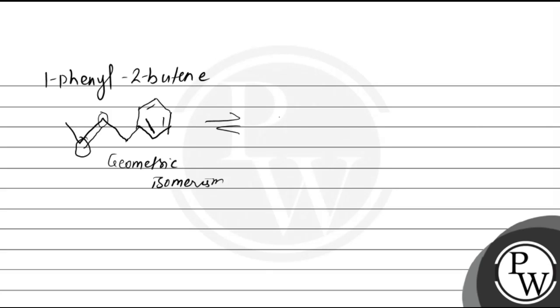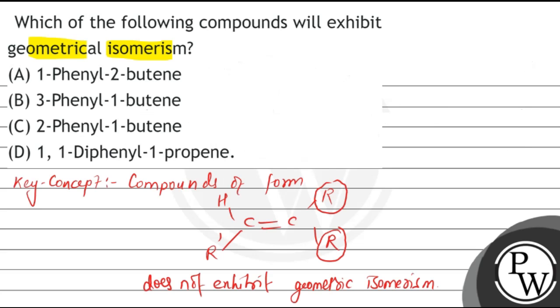Geometrical isomers are here. This, that is, trans form and... So option A, that is 1-phenyl-2-butene, exhibits geometrical isomerism.